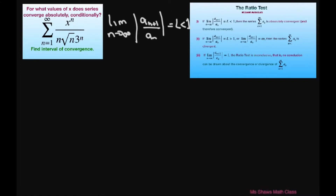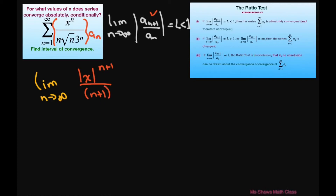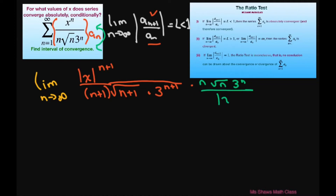So basically let's look at this. We're going to take the limit as n approaches infinity. This is your a sub n here. So this part here we're going to do the absolute value of x to the power of n+1, divided by (n+1) times the square root of (n+1) times 3 to the power of n+1. And then we're dividing by a sub n, which is the same as multiplying by the reciprocal. So that's going to be n times square root of n times 3 to the power of n, all divided by absolute value of x to the power of n.